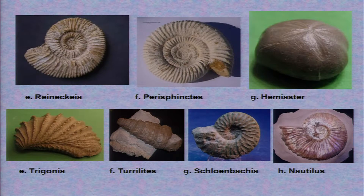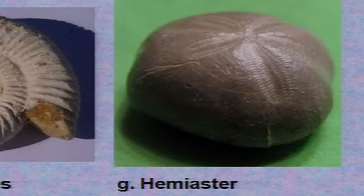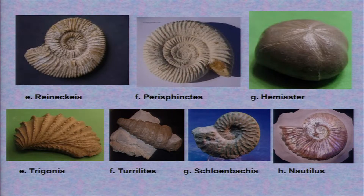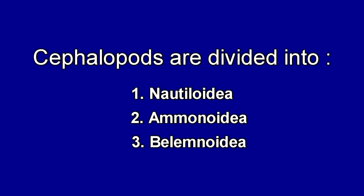This slide consists of Ammonoids and one fossil from Echinoidia — that is Hemiaster — and one fossil from Lamelibranchia, that is Trigon Arca. The Cephalopods are divided into three subsections: Nautiloidia, Ammonoidia, and Belemnites.